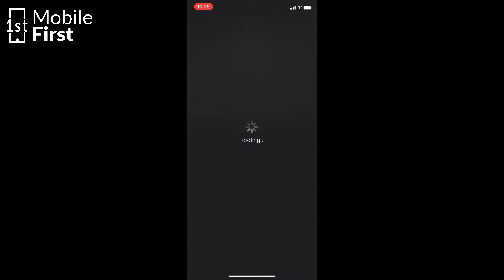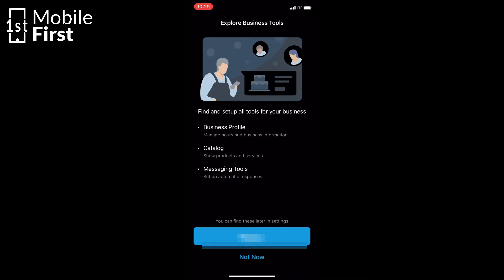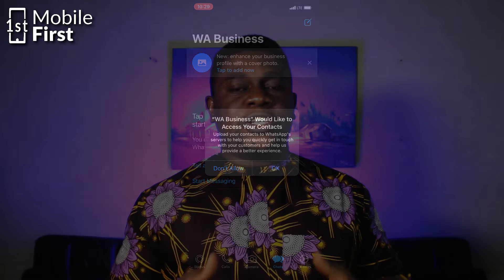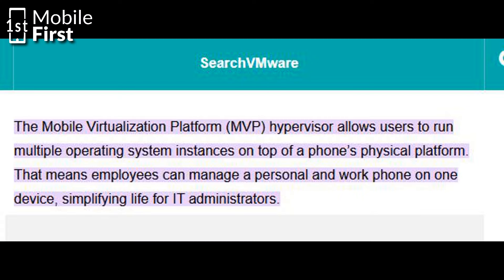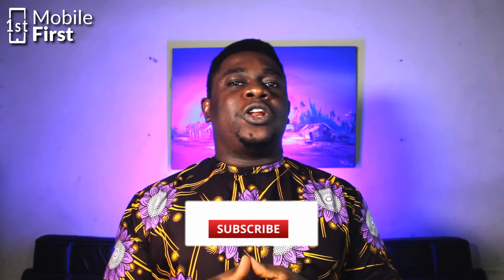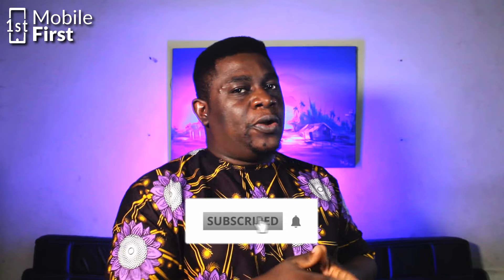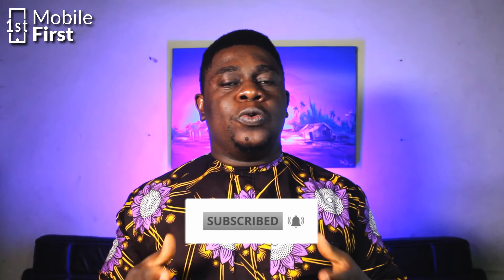If you want to install more than two, you will have to go through a process called virtualization. Virtualization is a process whereby you install software on your iPhone that mimics having another operating system running inside your iOS. This allows you to carry out virtualization and install another copy of either the iOS or Android operating system inside your iOS, enabling you to install more copies of WhatsApp.